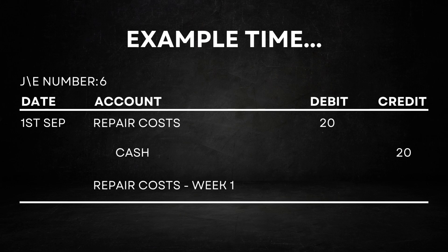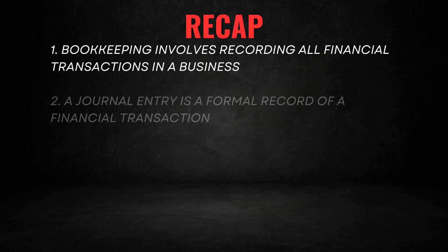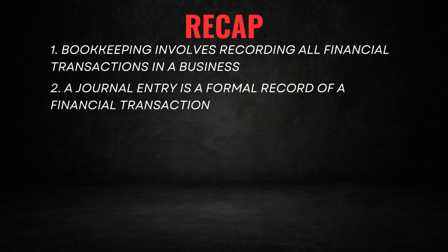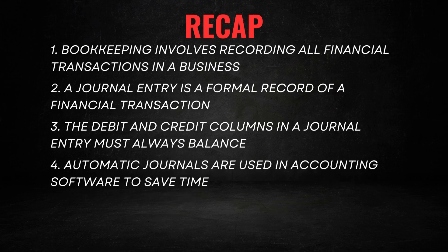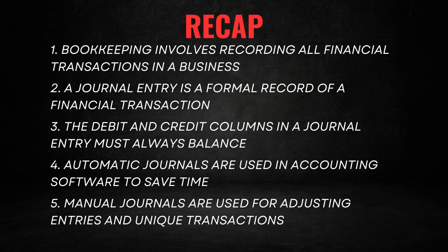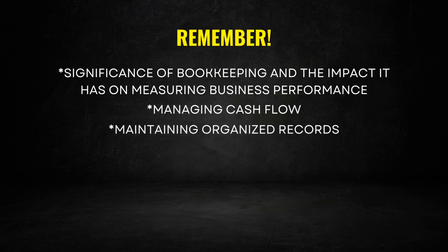Let's recap what we have learned. Bookkeeping involves recording all financial transactions in a business. A journal entry is a formal record of a financial transaction. The debit and credit columns in a journal entry must always balance. Automatic journals are used in accounting software to save time, while manual journals are used for adjusting entries and unique transactions. Remember the significance of bookkeeping and the impact it has on measuring business performance, managing cash flow, and maintaining organized records.